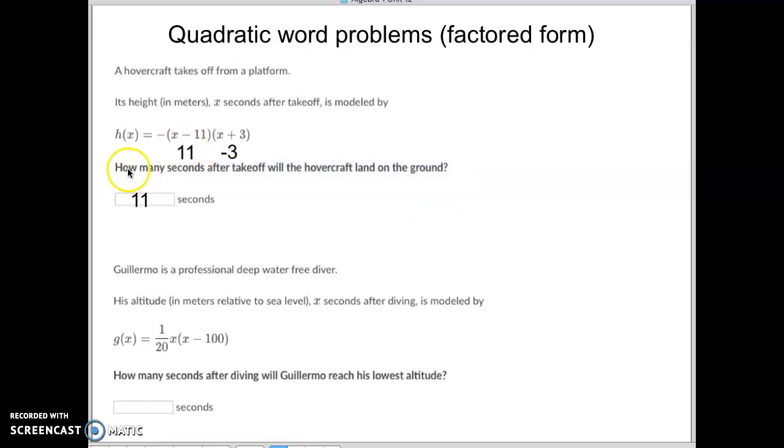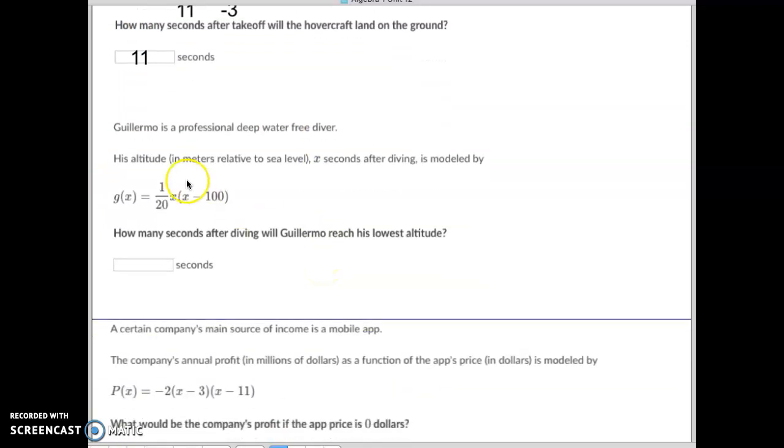Let's do the next one. Again, you'll notice I don't even read the top part. I don't care about it. I read the question: how many seconds after diving will Guillermo reach the lowest altitude? So the lowest altitude, the lowest point of diving, would be your vertex, like how low can he go, correct?